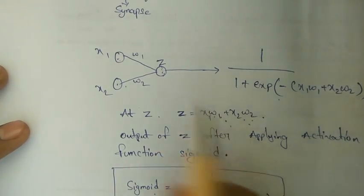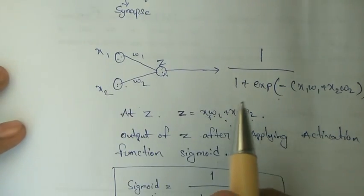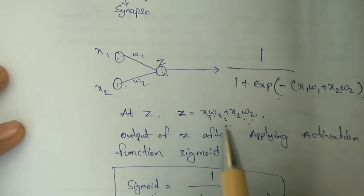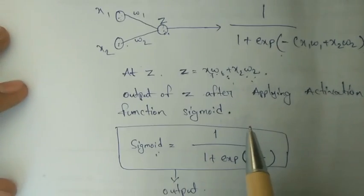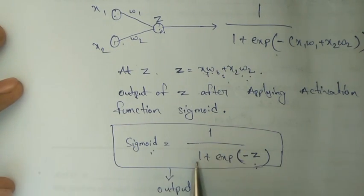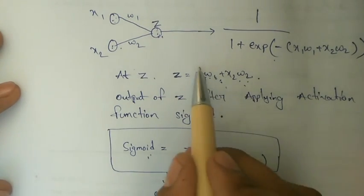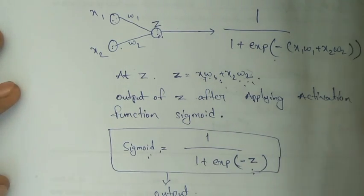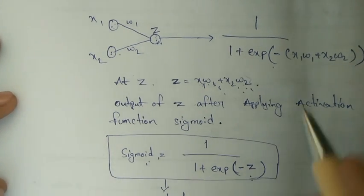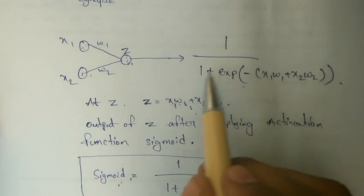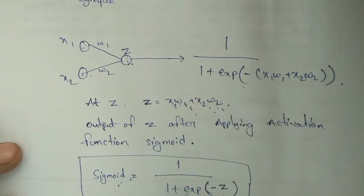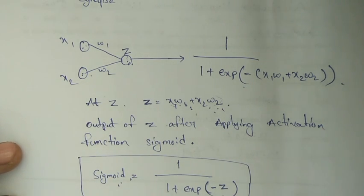Let's see an example. This is our neural network — these are inputs and this is the output. At the output, we will calculate x1w1 plus x2w2. On this, we will apply the activation function. The sigmoid is an activation function: the sigmoid is 1 by 1 plus e power minus x. After calculating the output x1w1 plus x2w2, we will apply the sigmoid function to determine whether to pass the output or not. When we apply the activation function, we get the value 1 by 1 plus e power minus (x1w1 plus x2w2). This total value lies between 0 and 1. Depending on that, the neuron will pass the signal.